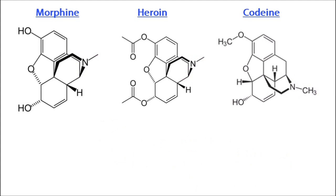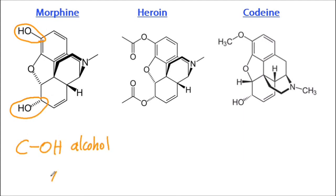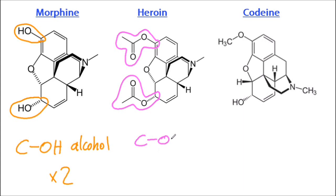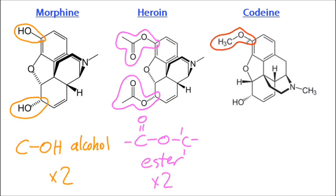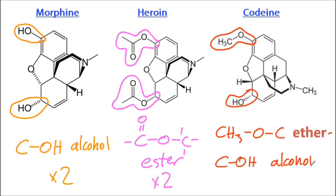Let's look at the subtle differences. Morphine has two alcohol groups. Heroin — that functional group there is an ester. So heroin is synthetic or semi-synthetic; it takes a natural molecule and then you do a simple chemical process on it. And codeine — they've replaced one of those morphine alcohols with an ether group. The ether group is not on the syllabus; you don't need to learn the ether group.